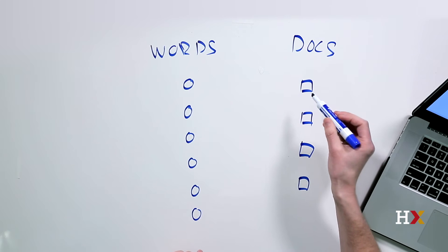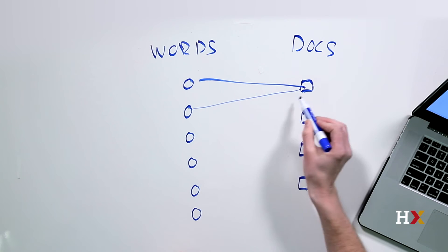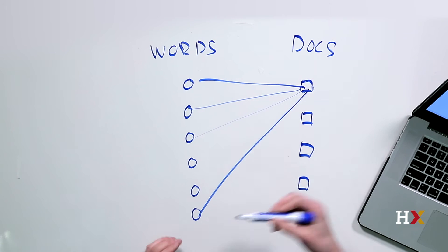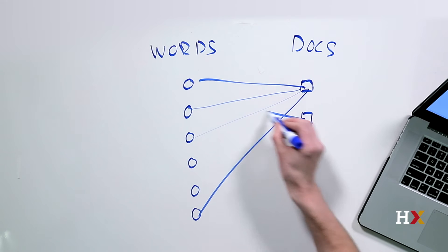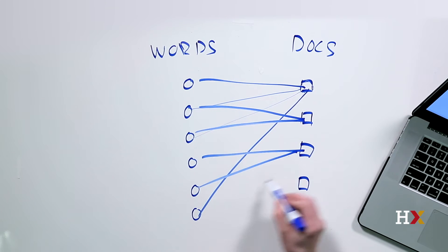So for example, in this particular document, these four words might appear. Of course in practice you have many more, but this is just a schematic of the basic idea. In the second document we might have these words, and let me just fill in this picture.